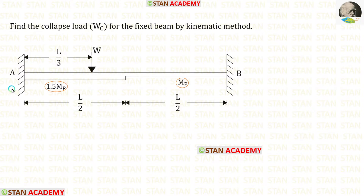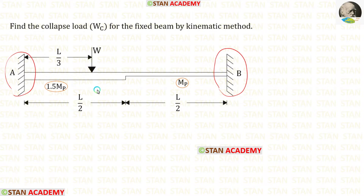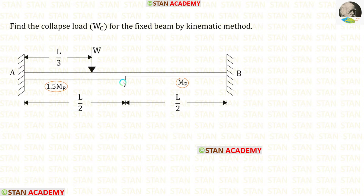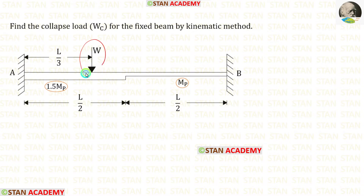In this fixed beam, at the fixed end A there will be a plastic hinge. At the fixed end B also there will be a plastic hinge. The third plastic hinge can occur either under the point load or in the center. We have to consider the center as a joint because on the left side and right side we have different cross sections. In this case there will be two mechanisms: one under the point load and one in the center.